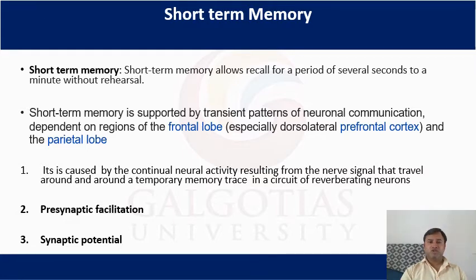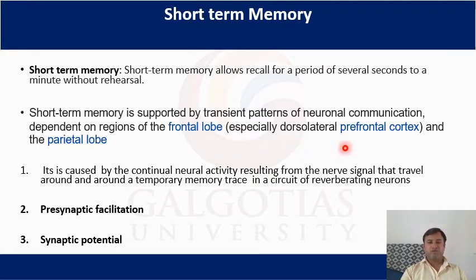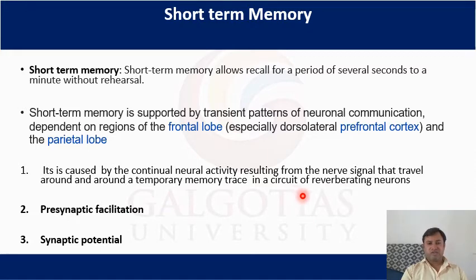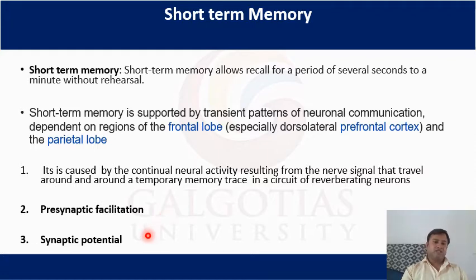Short-term memory allows recall over a period of several seconds to minutes without rehearsal. It is supported by transient patterns of neural communication depending on the frontal lobe, prefrontal cortex, and parietal lobe. Three hypotheses explain short-term memory: first, continuous neural activity from nerve signals traveling around reverberating neuron circuits; second, pre-synaptic facilitation; and third, synaptic potentiation.